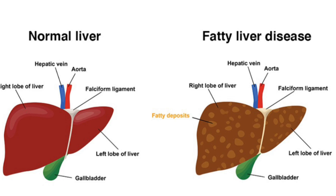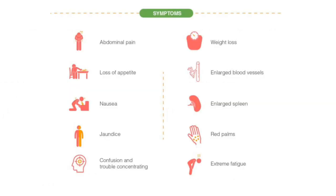Now let's understand the symptoms of fatty liver disease. It is often hard to detect because its symptoms are not easily noticeable. The first sign is sharp pain or discomfort in the upper right side of your abdomen. The disease can become quite serious in some cases, leading to liver scarring and cirrhosis, which is a life-threatening health problem.